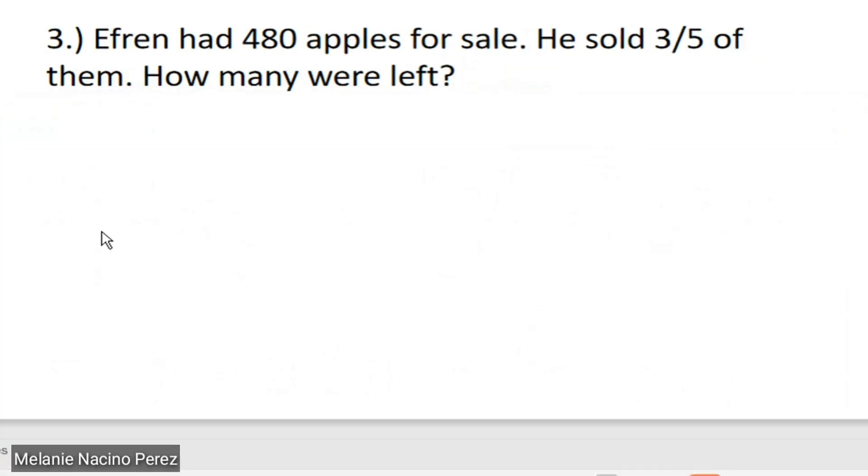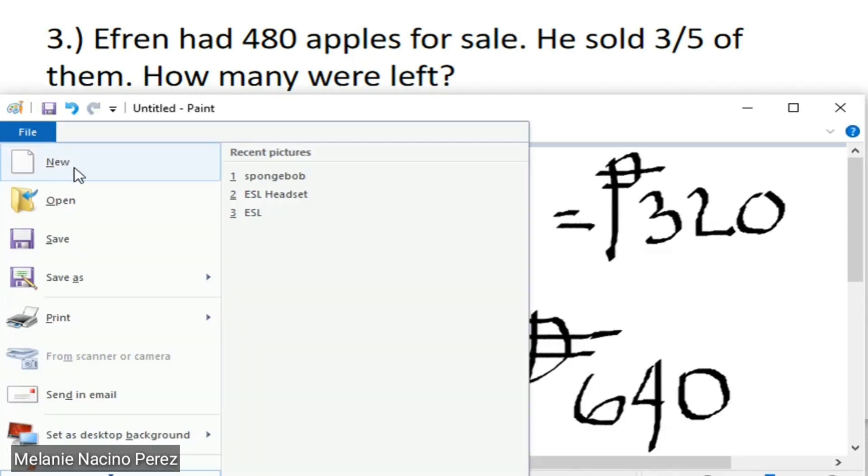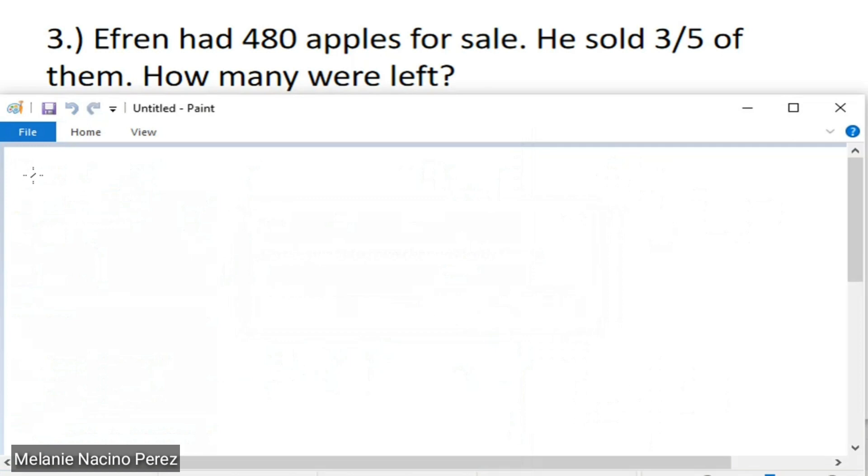Next, we have Efren who had 480 apples for sale. He sold 3 fifths of them. How many were left? So, we have a total of 480 apples.